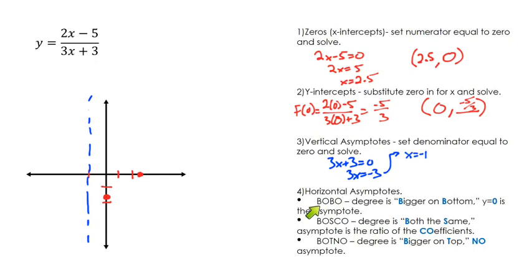If the degree is bigger on bottom, then the asymptote's at y equals zero. That's not our situation here. We don't have a bigger on bottom. That would be if we had like a fourth degree down here, but a third degree up here. That would be bigger on bottom.